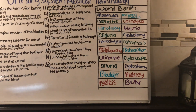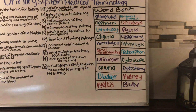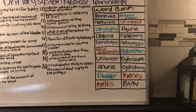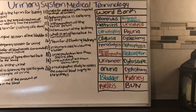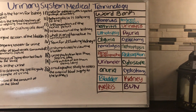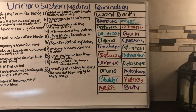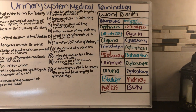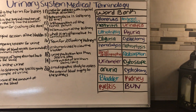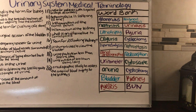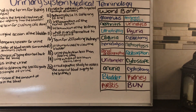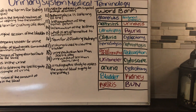Number ten: what is the measure of the amount of urea in the blood? BUN — Blood Urea Nitrogen.